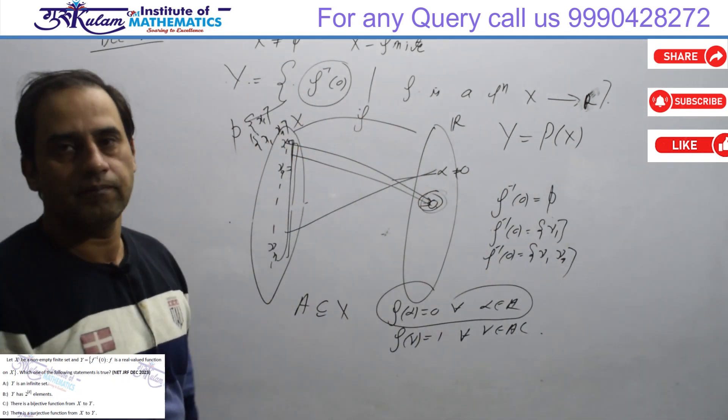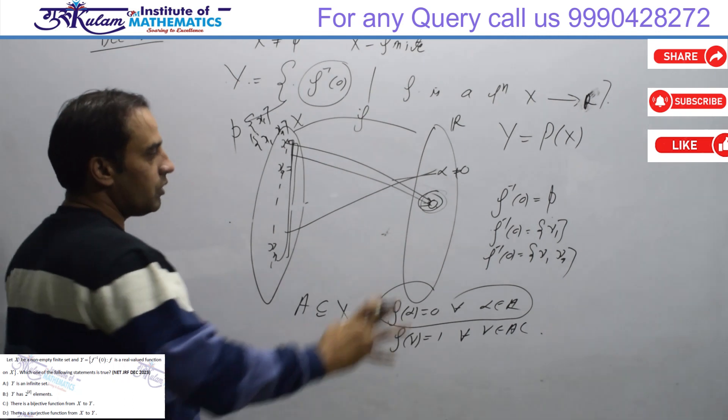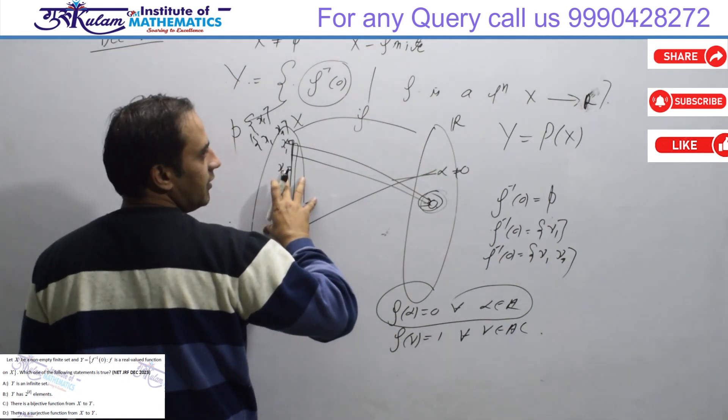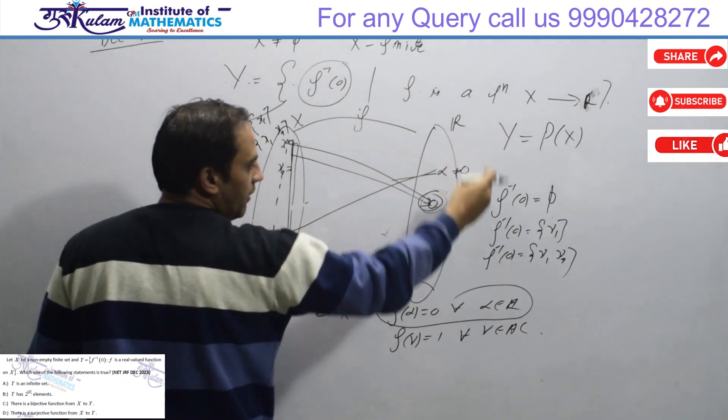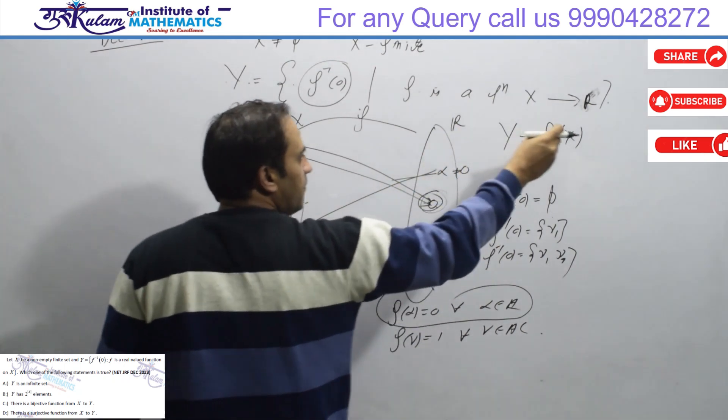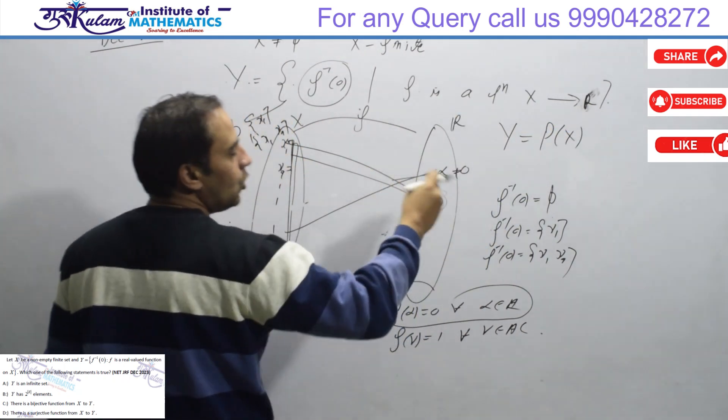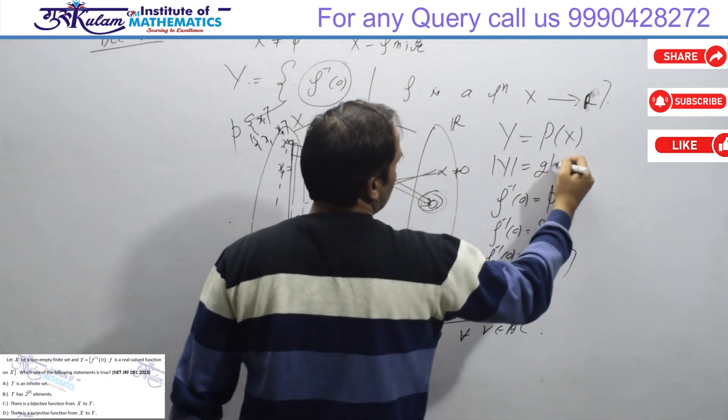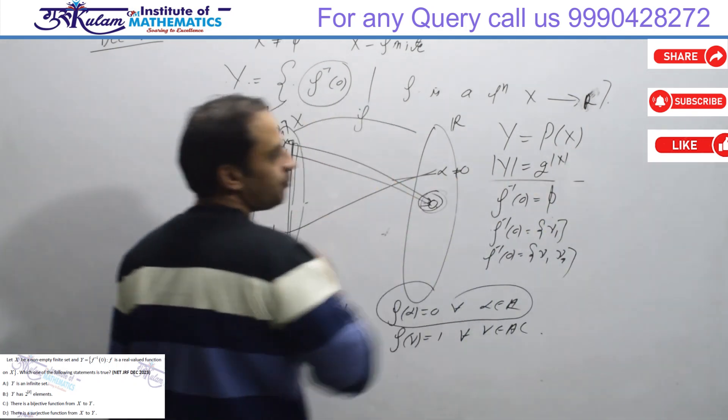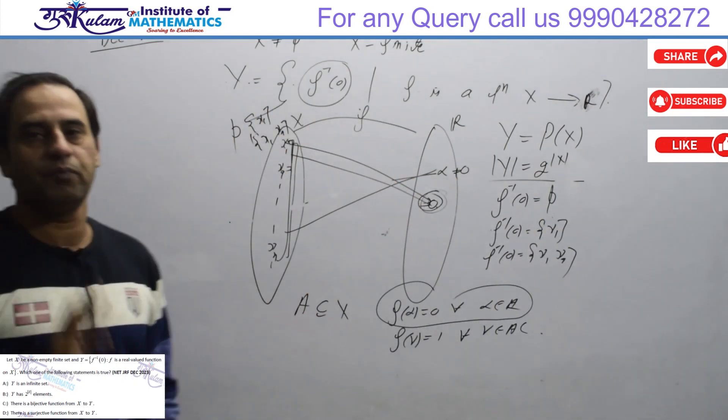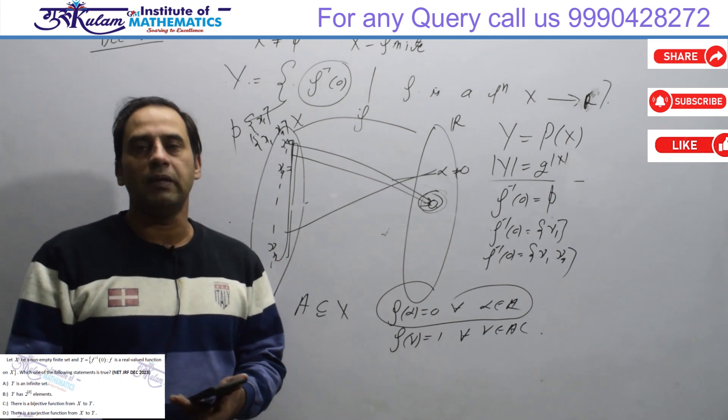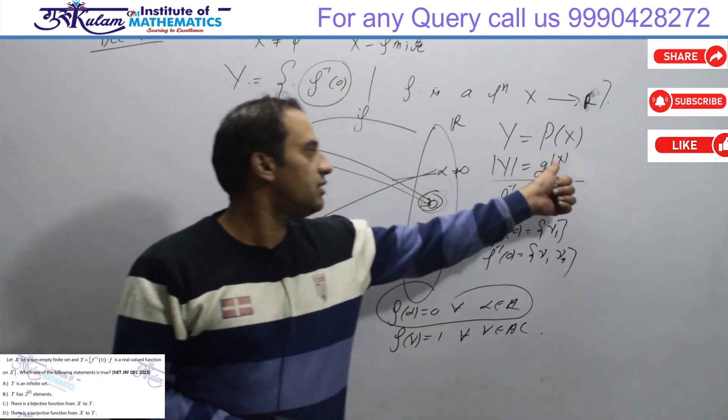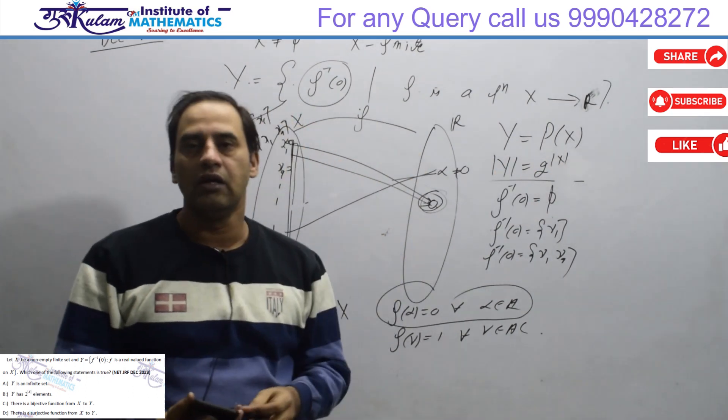I think this is clear. For every function, I need to look at the collection of pre-images. Every element of the power set of X is in Y, and nothing outside it. So cardinality of Y is 2 to the power cardinality of X. So option B is proved.